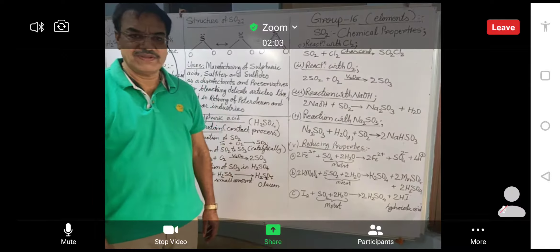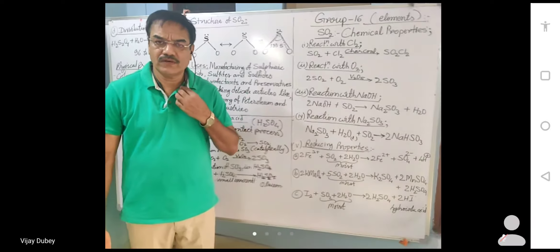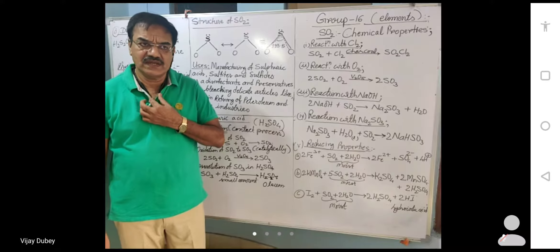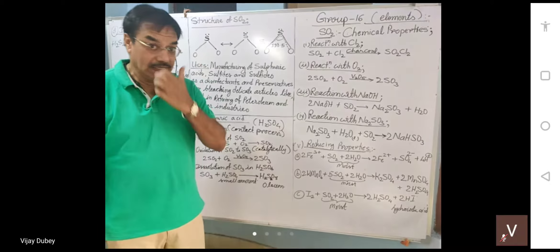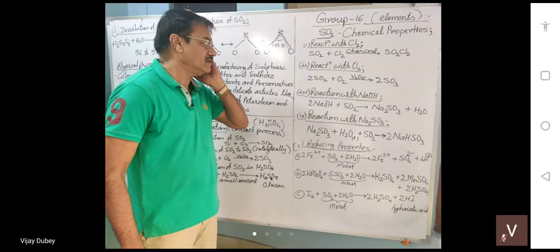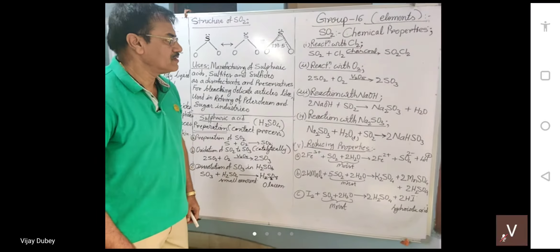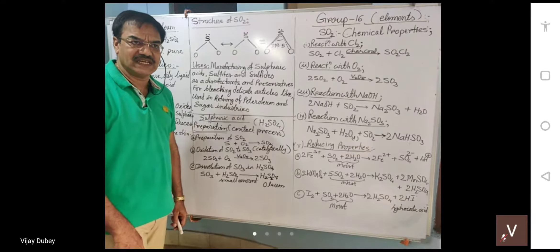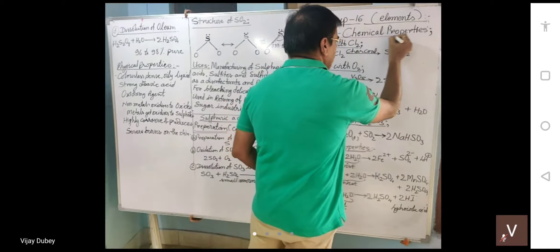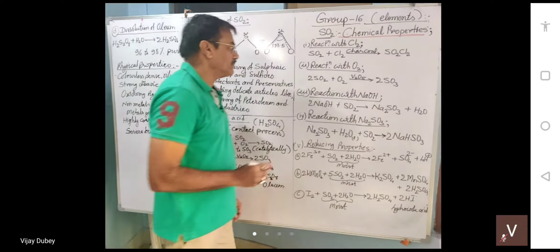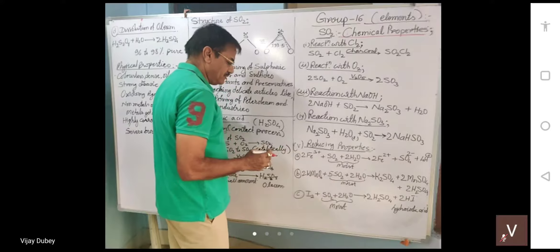Welcome back, students. We will continue with the topic of Group 16 elements. Yesterday we had seen methods for the preparation of sulfur dioxide and its physical properties. Today we will see the chemical properties of sulfur dioxide. There are several reactions — a total of five reactions.